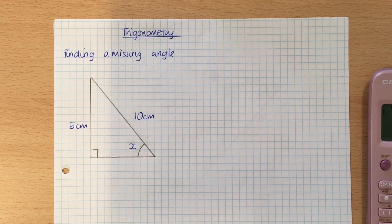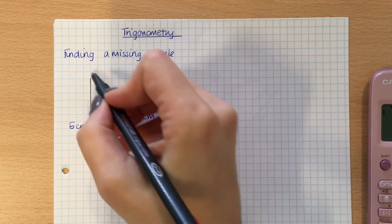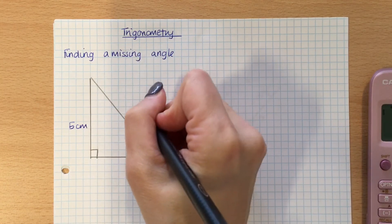So the first thing that you need to do, and that's the same with any trigonometry question, whether it be finding a missing angle or a side, you need to label the sides. So if you remember, the longest side is the hypotenuse, so I call that H.